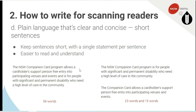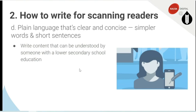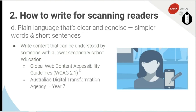The reason to use simple words and short sentences is because we need to write content that can be understood by someone with a lower secondary school education. This is one of the requirements from the Global Web Content Accessibility Guidelines, WCAG 2.1, which says lower secondary. Australia's Digital Transformation Agency went further and said Year 7. You're aiming for Year 7 to Year 9 — someone with that level of education could read your copy and understand it. Particularly important for websites going to the general population, like government websites, but even someone with a master's or PhD will find it easier and faster to find information if it's written at a Year 7 level.